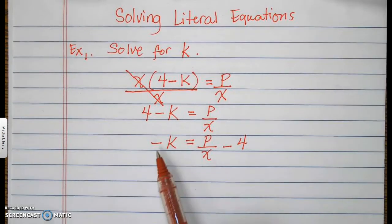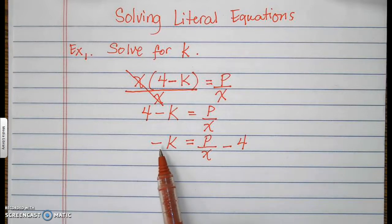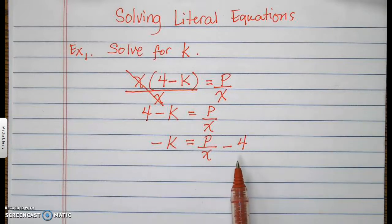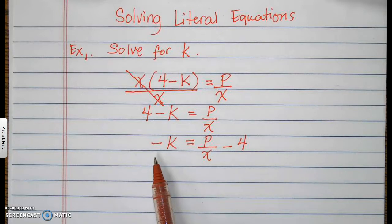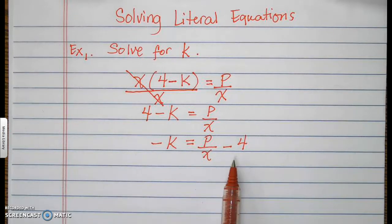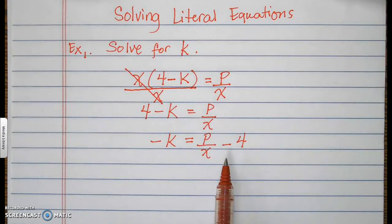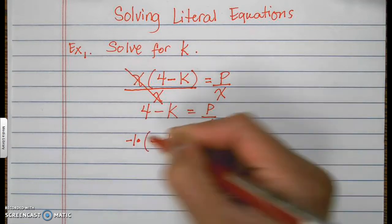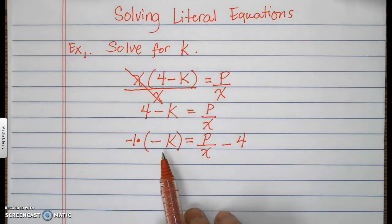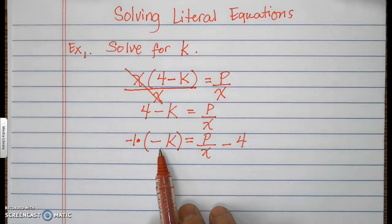To make k become positive — a positive 1 in front — we can do it two ways. We can divide both sides by negative 1, or we can multiply both sides by negative 1. I'll multiply this side by negative 1 to turn the negative 1 in front of k into a positive 1. Negative 1 times negative 1 is positive 1.